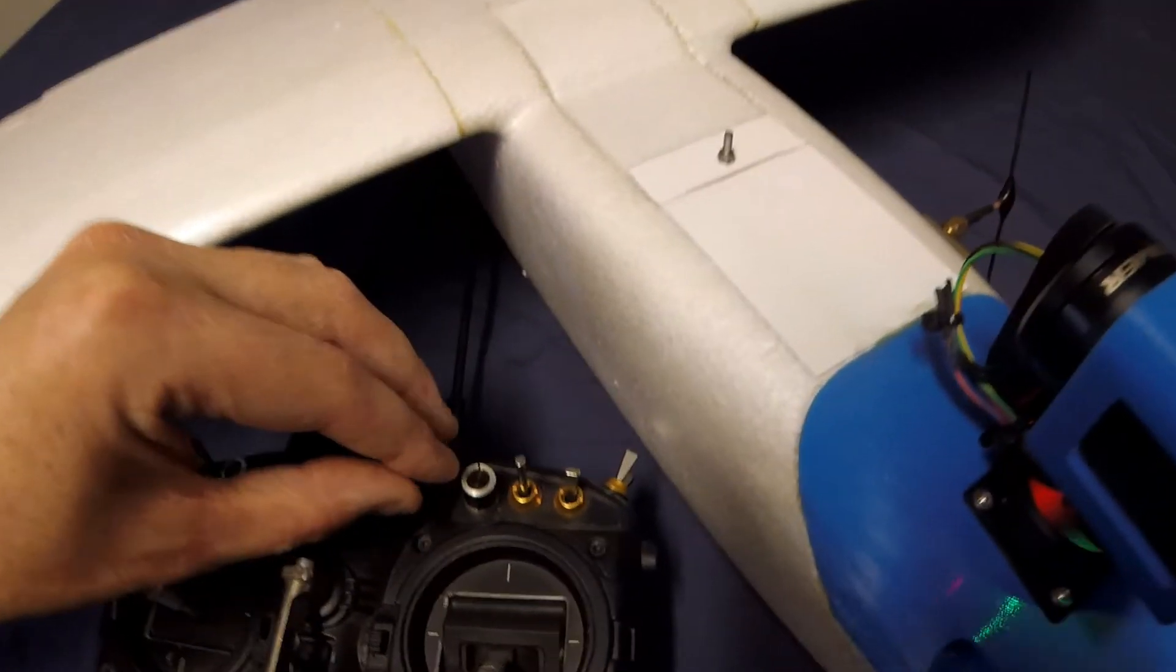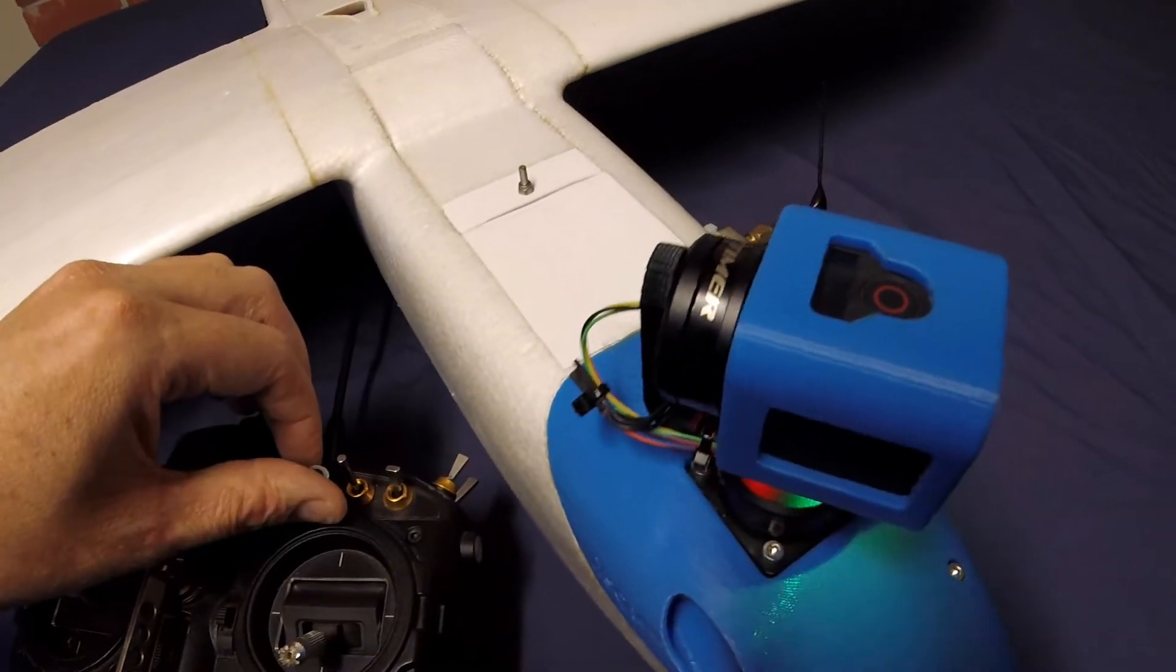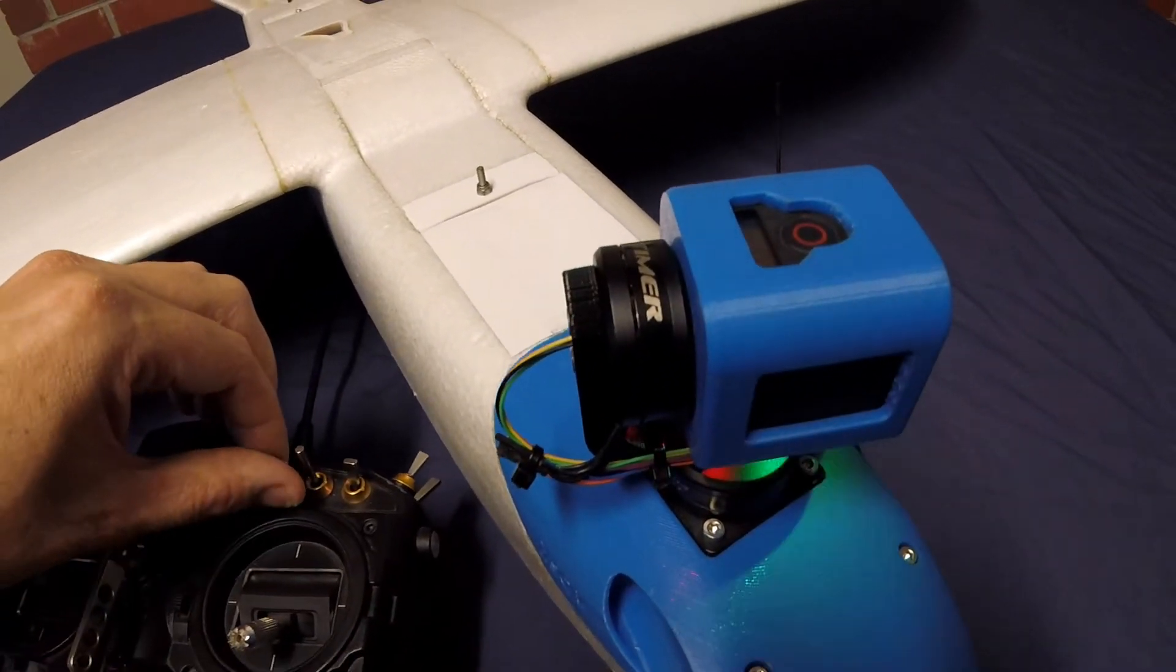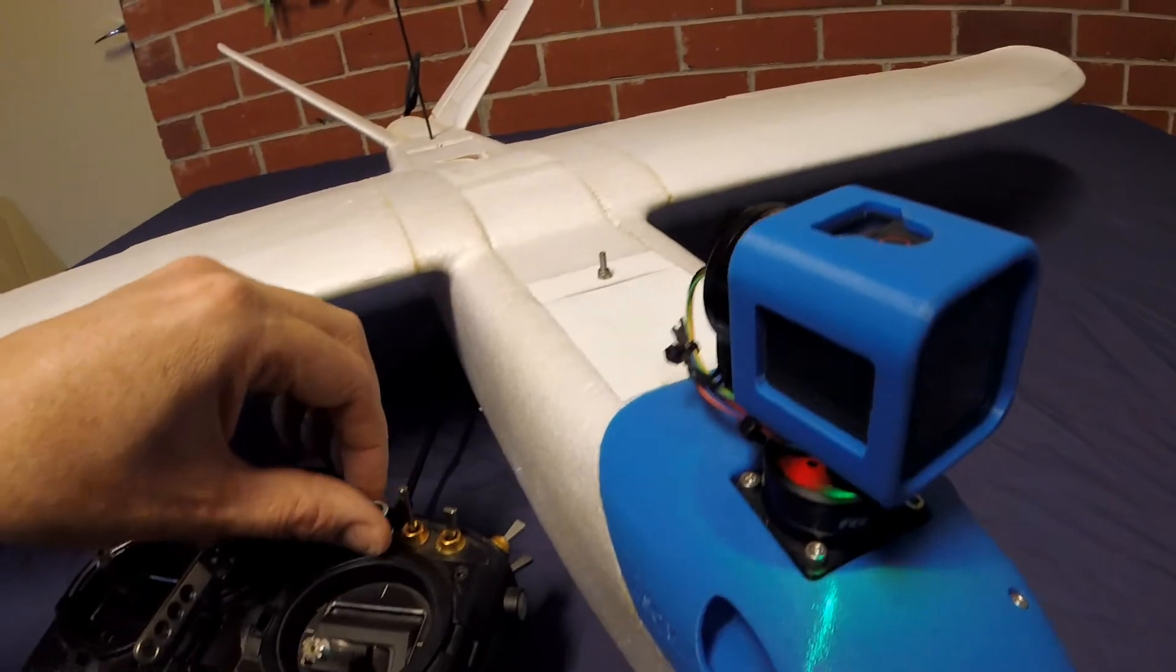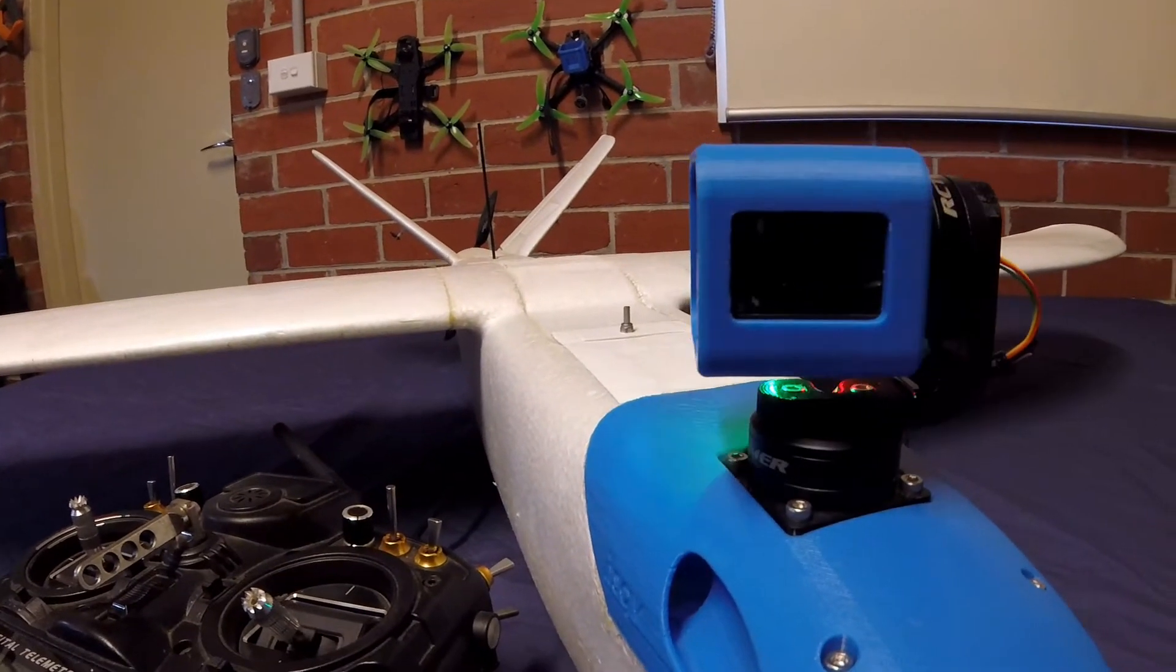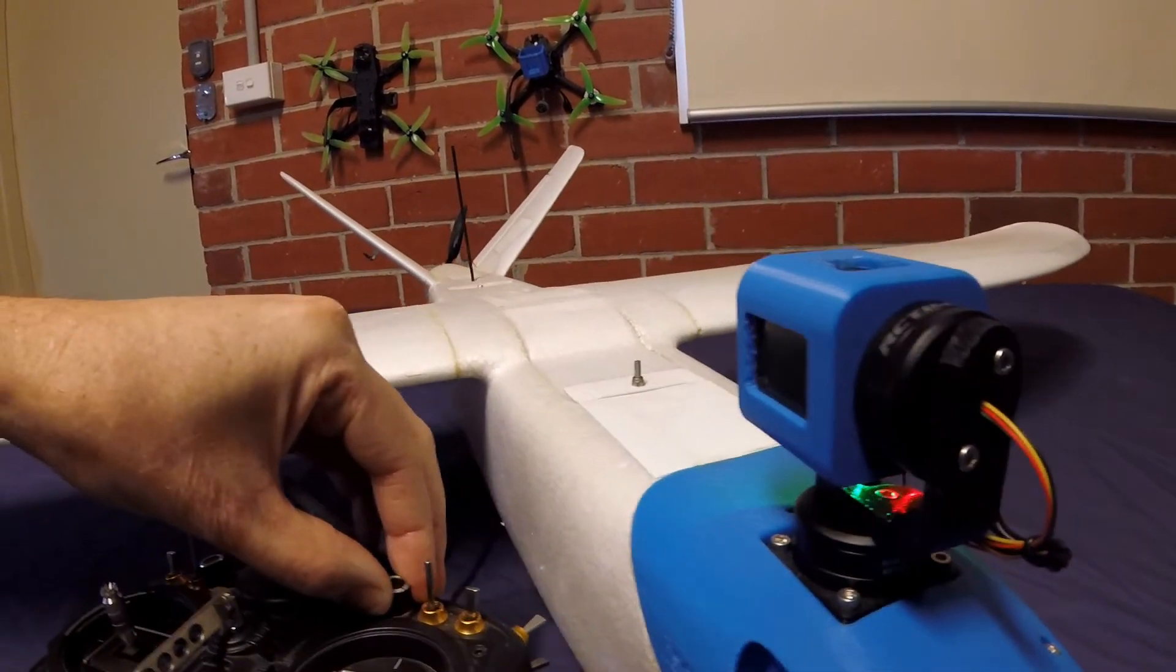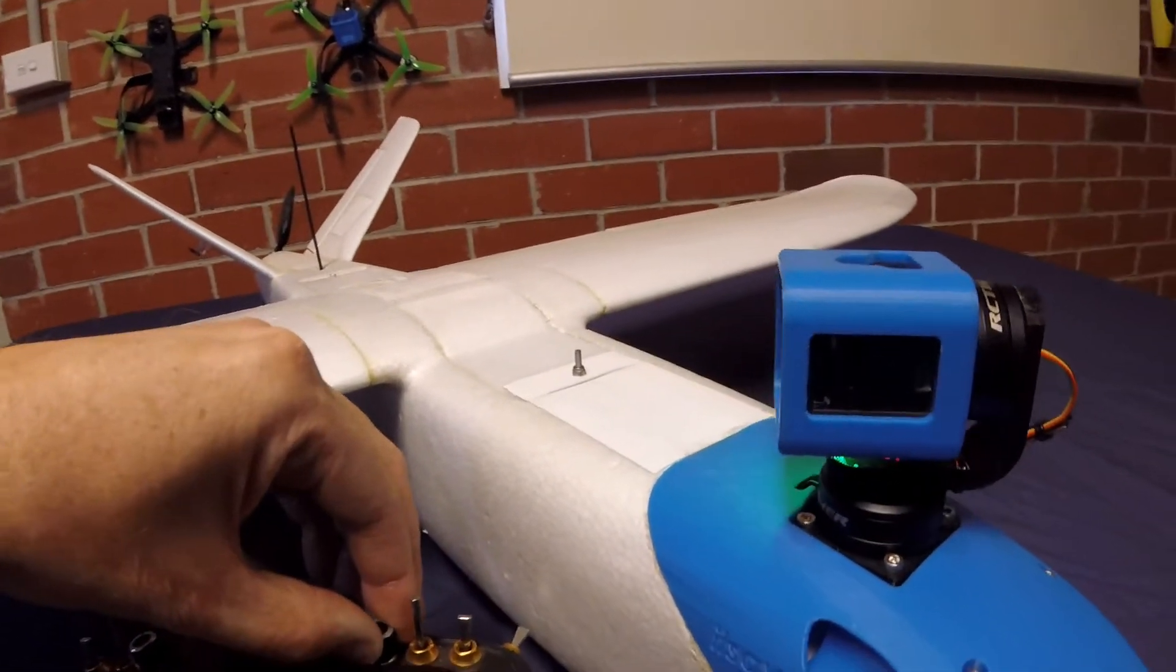I control the direction of the gimbal with this dial here. I've got the Storm32 set up so that it can do a full 360. So I twist the dial all the way around and the gimbal will look backwards. And then twist it the other way, and it will do a full circle.